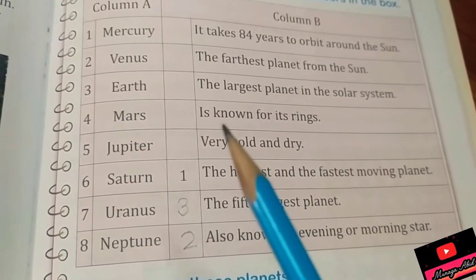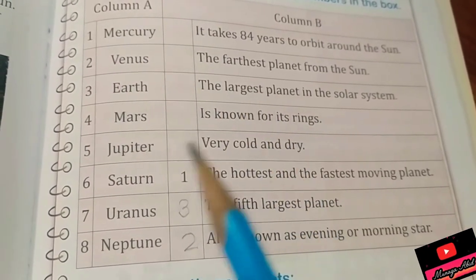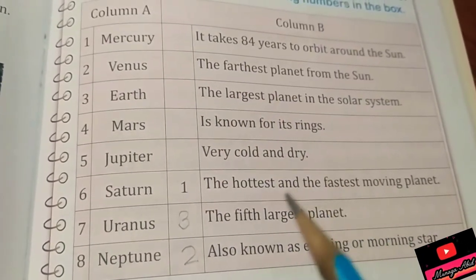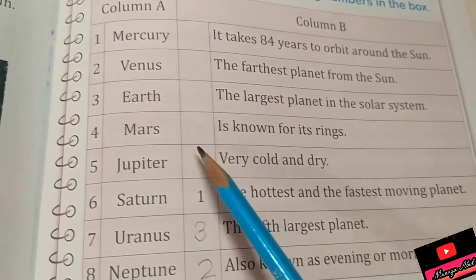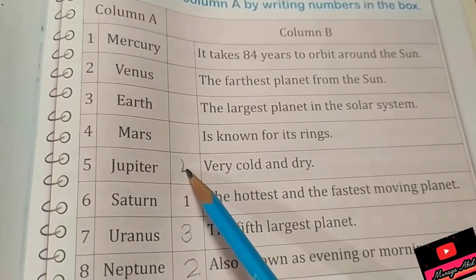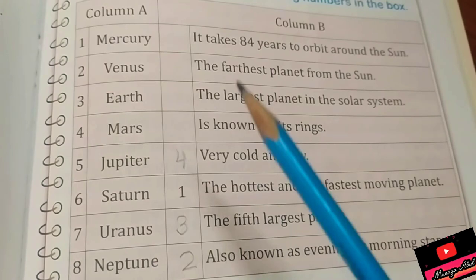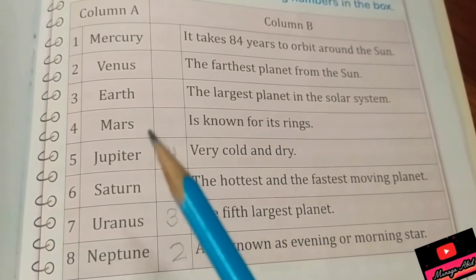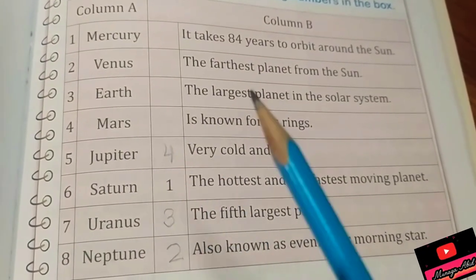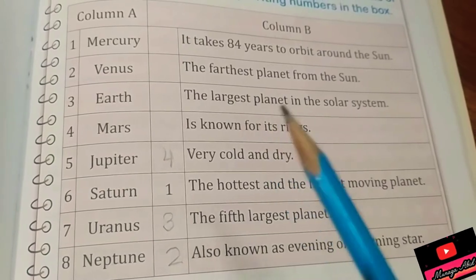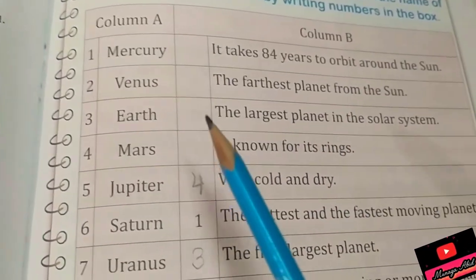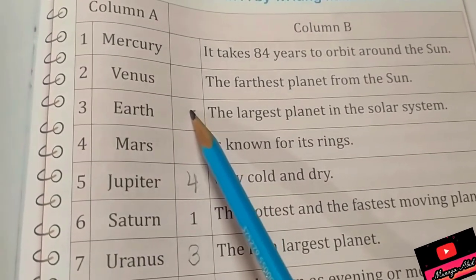Now they're saying that it is known for its rings. It should be Saturn, and Saturn is number six. Now we have to first figure out Mars. Very cold and dry is Mars. Now Jupiter is there. Oh yes, that's our largest planet in the solar system, so here we should write five.